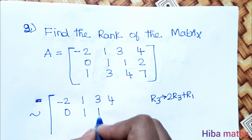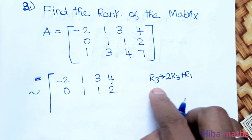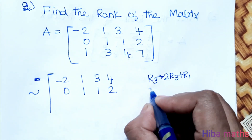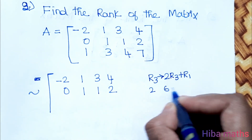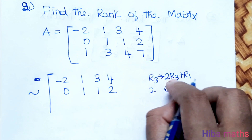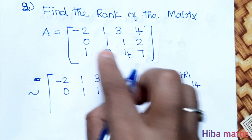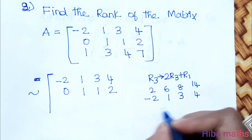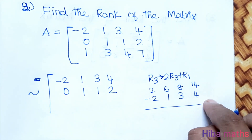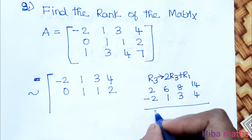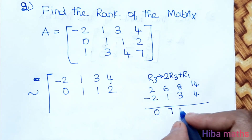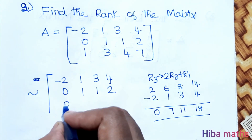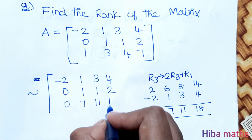The second row has no change. The third row will change. We compute 2 times R3: 2 sevens are 14, then plus R1 which is [-2, 1, 3, 4]. So: 2 minus 2 is 0, 6 plus 1 is 7, 8 plus 3 is 11, 14 plus 4 is 18. The new R3 is [0, 7, 11, 18].